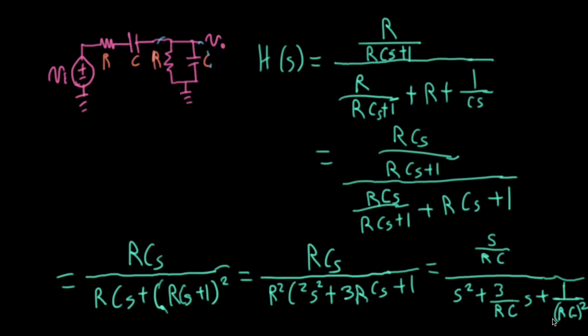So in our canonical filter form, this last term here is omega N squared, so the natural frequency of this bandpass filter, the center frequency, the peak frequency, is going to be 1 over RC. And then this term next to it, that corresponds to the damping ratio zeta omega N times 2.